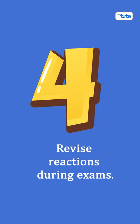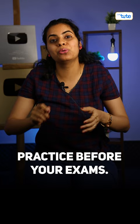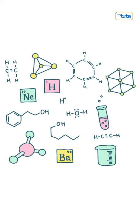Tip number four: rewrite and revise the chemical equations. Before the exam, make sure that you write them down again and again, because these are the ones which are very scoring but still will give you nightmares, right? I hope you understood. Thank you for watching. This way, you won't ever forget.